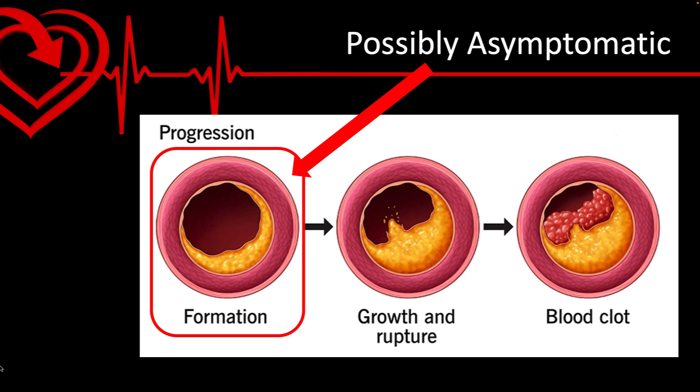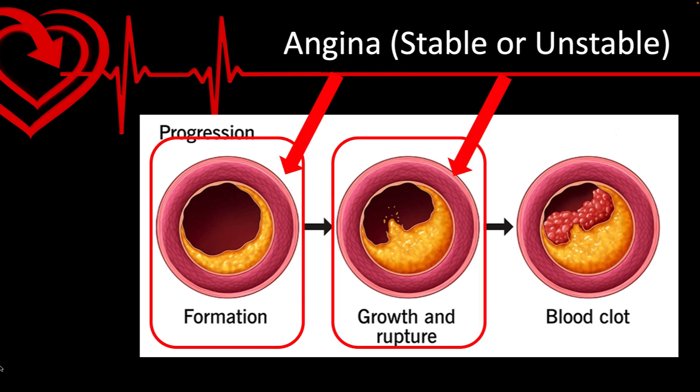That decreased blood supply decreases the amount of oxygen available to the heart cells and can result in ischemia and chest pain, especially on exertion, but may not cause any symptoms at all. When that chest pain is relieved with rest or by taking nitroglycerin, it is called stable angina. When those simple steps no longer relieve the pain, it is classified as unstable angina and is often an indicator of a worsening obstruction.